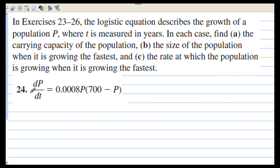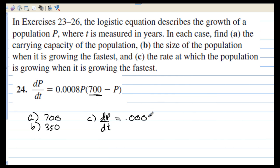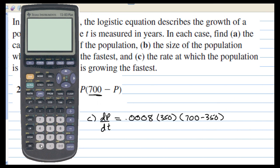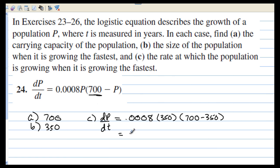For exercise 24, the differential equation is given. Part A: the carrying capacity is 700. Part B: the population when growing fastest is 350 — half the carrying capacity. Part C: the rate at which the population is growing when it's growing fastest requires plugging in P equals 350. So dP/dt equals 0.0008 times 350 times (700 minus 350), which is 0.0008 times 350 squared. Using a calculator, that equals 98 — so 98 individuals per unit time.